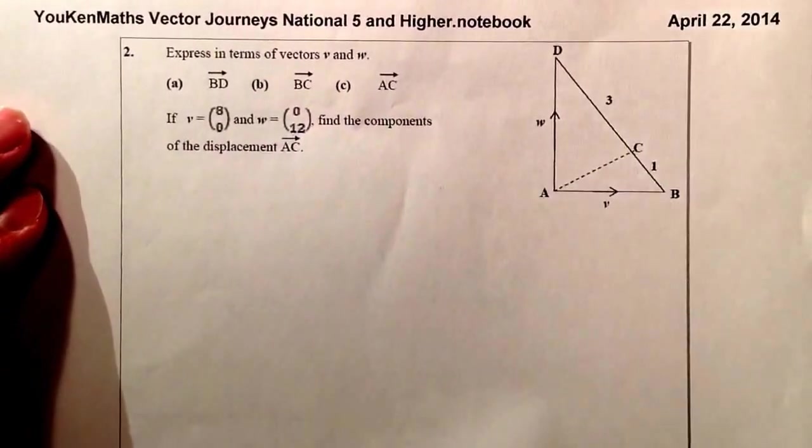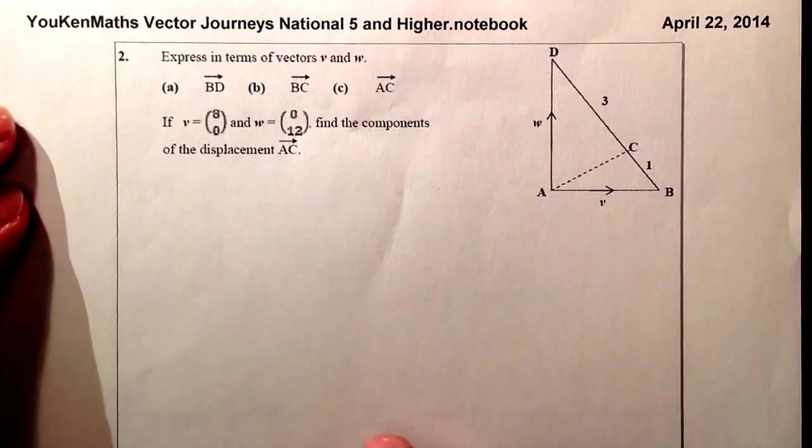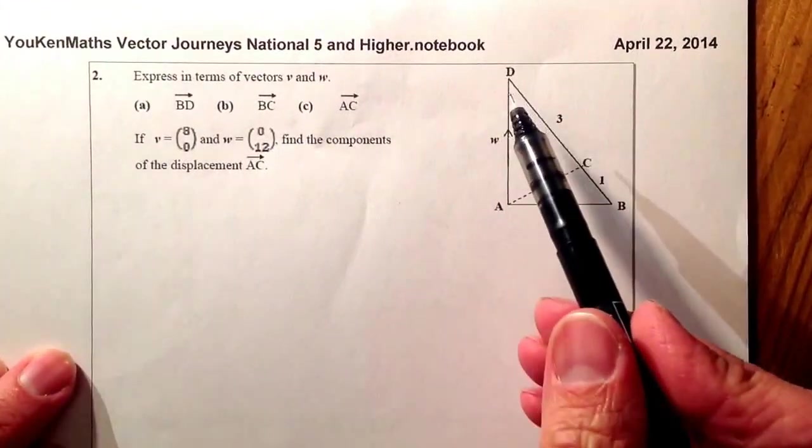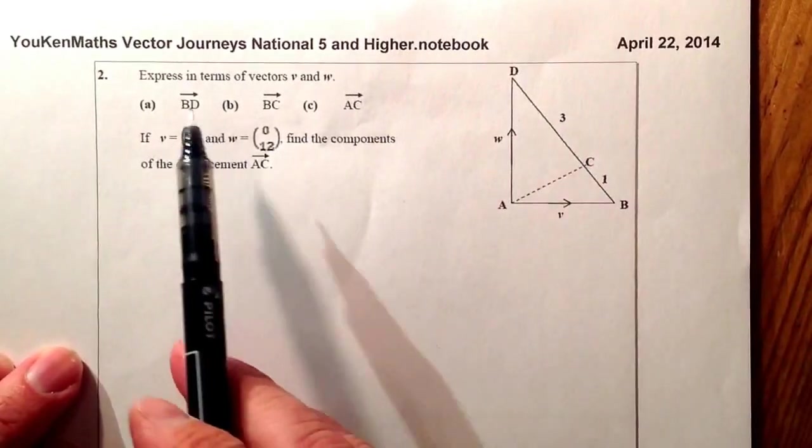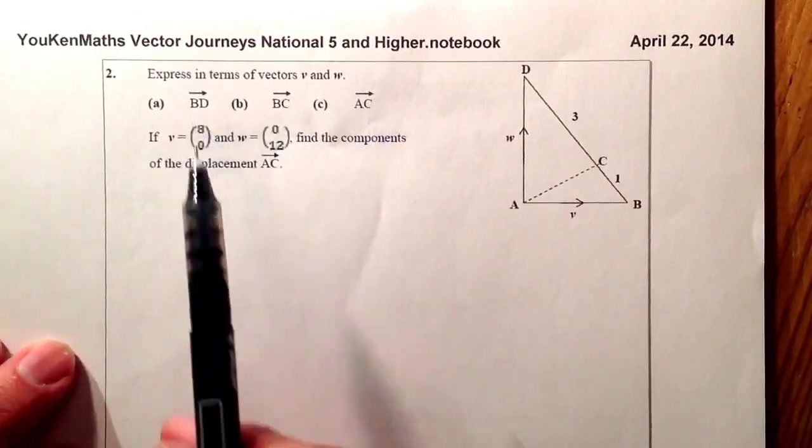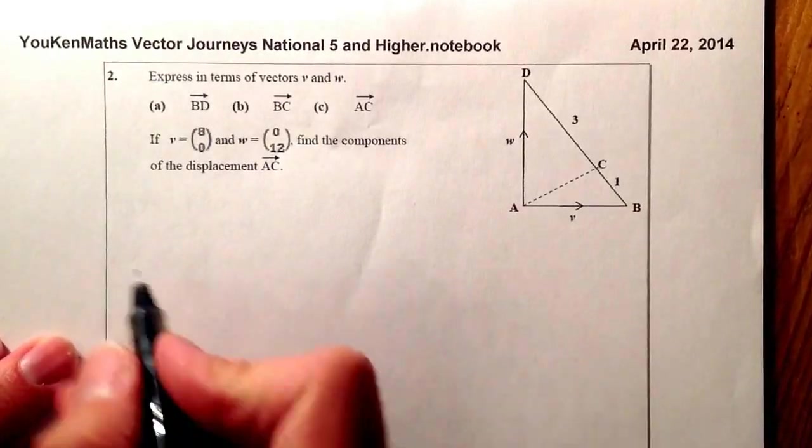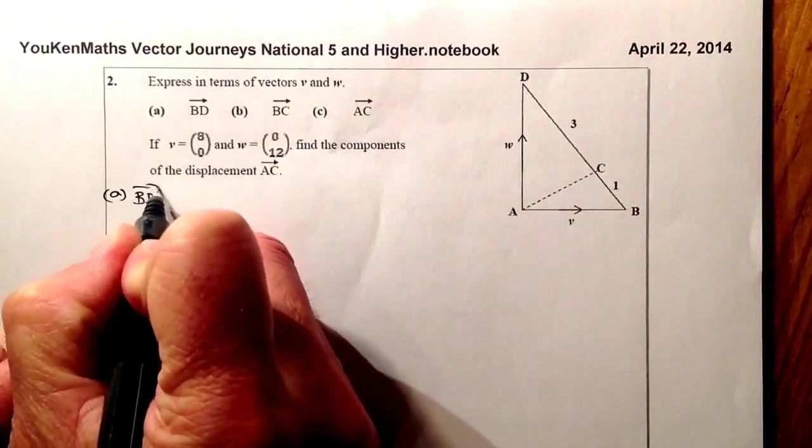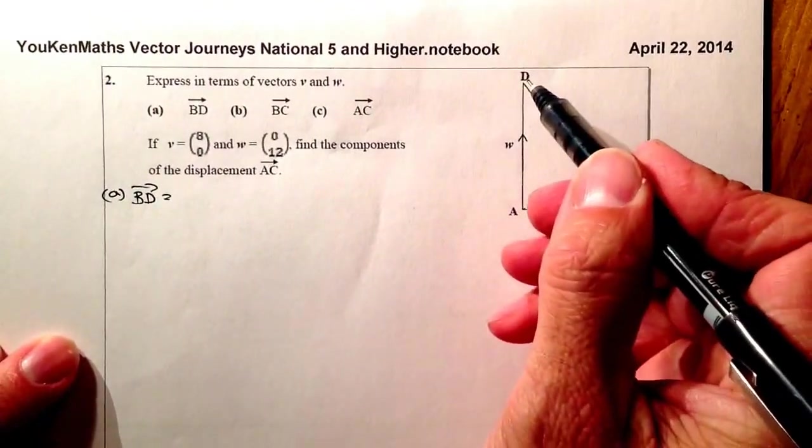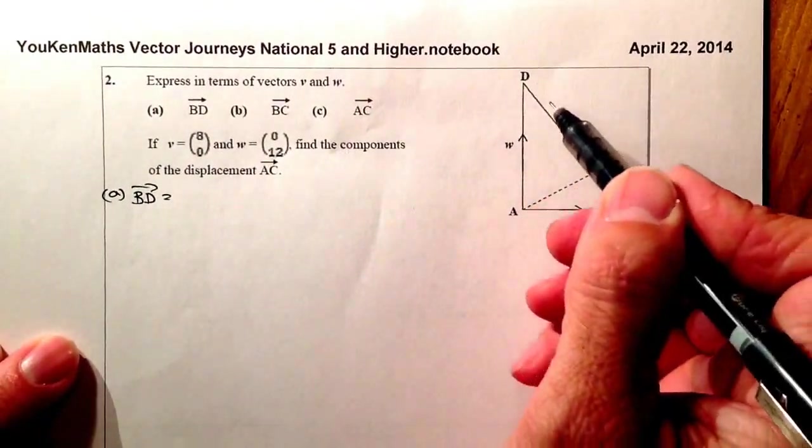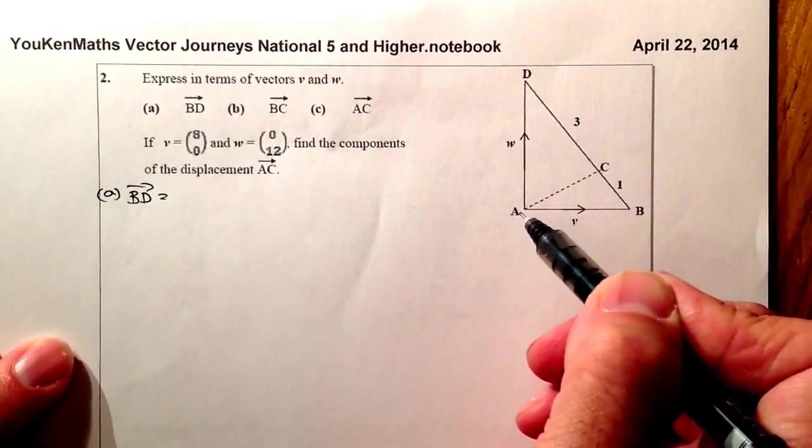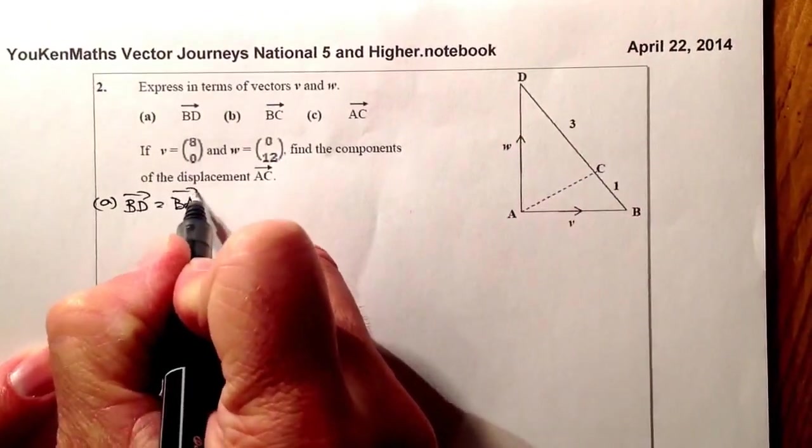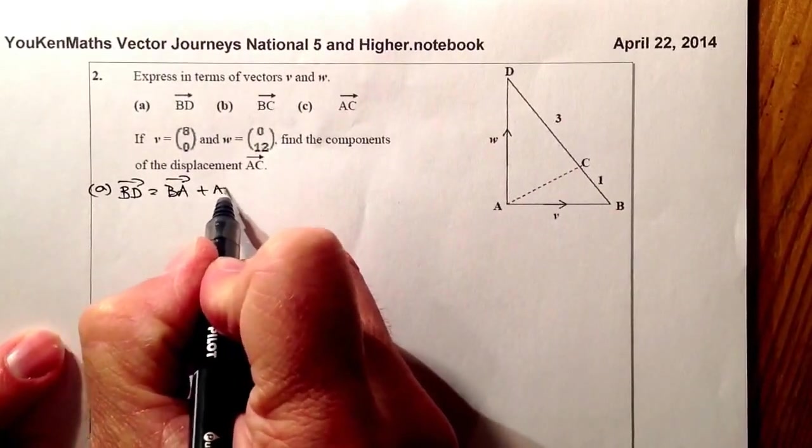Right, well, let's move on to the second question of this video clip. What we have here is we've got another diagram. We've got A, B, C, and D over on this side here. And we have to express it in terms of vectors V and W, the vector BD. So let's go ahead and do part A first of all. OK, BD is going to be equal to, so from B to D, instead of going straight up that route, I'm going to go along this way and up that way. So that's going to go from vector BA and then plus AD.